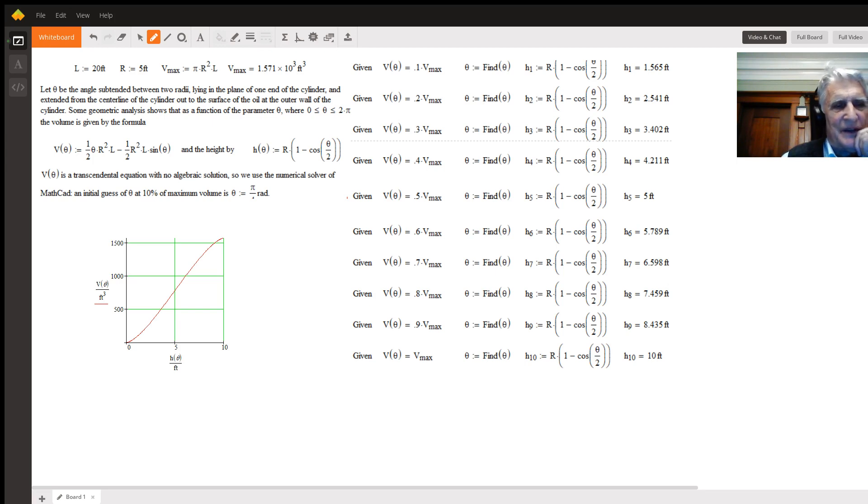Some more geometry will tell you that the height as a function of theta is h(θ) = r(1 - cos(θ/2)), measured from the bottom of the tank to a triangle formed by the center and the two radii where they join the wall. This needs a picture, which I'll provide in a later update.